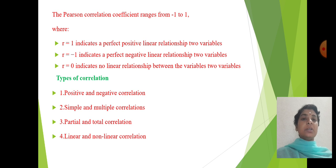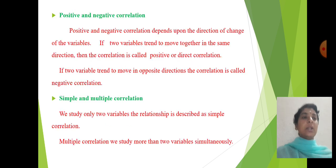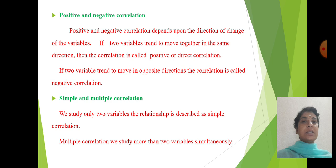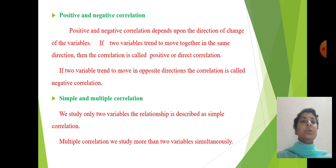The types of correlation are: positive and negative correlation, simple and multiple correlation, partial and total correlation, and linear and non-linear correlation. If the variables tend to move together in the same direction, it is called positive correlation. If the two variables tend to move in opposite directions, it is called negative correlation.